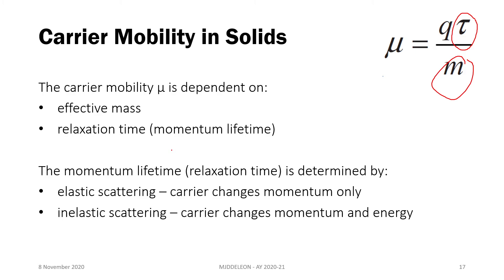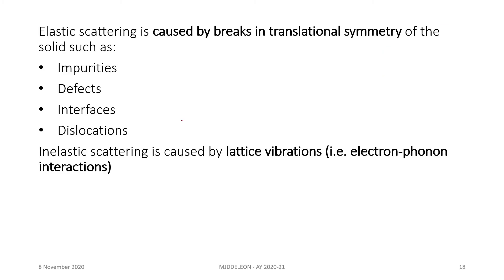The relaxation time is the average time between collisions for our electron. There are two types of collision or scattering processes we consider: elastic and inelastic scattering. Elastic scattering involves only a change in momentum for our electron — the energy remains the same. Elastic scattering events are caused by breaks in translational symmetry of the solid, such as impurities, defects, interfaces, and dislocations.